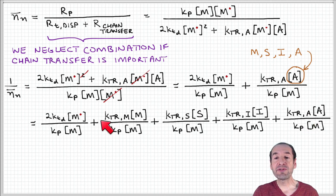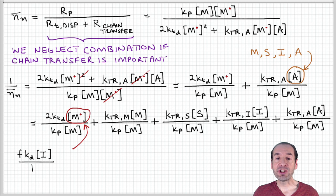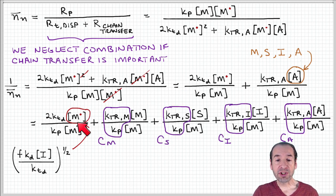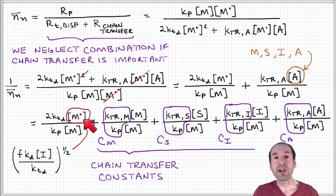And remember, this involves transfer of the free radical away from the active chain to somewhere else so that the active chain then becomes a dead chain. We know an expression for this concentration of active chains in the system. We derive that during our kinetic analysis by employing the steady state approximation, so that can be substituted.